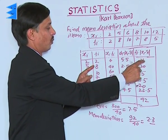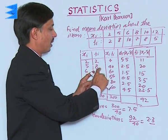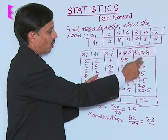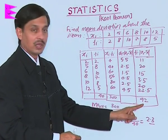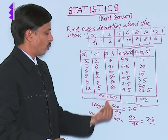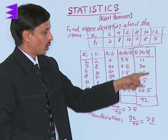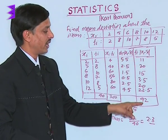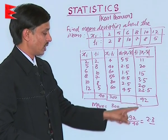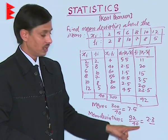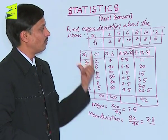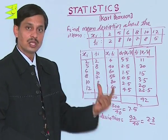Computing fi × di: 2×5.5=11, 8×2.5=20, and the remaining products are calculated similarly. The total sum of fi×di is 92. The mean deviation is the sum of fi×di divided by sigma(fi), which is 92/40 = 2.3. This is the mean deviation about the mean for this frequency distribution problem.